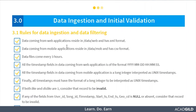Next is data ingestion and initial validation. This process is important because if you load invalid data and perform analysis, you will not get correct results, so you have to be very careful about whether the data is valid. There are two kinds of data being captured: one through web and the other through mobile. Data captured through the web is in XML format, and data captured through the mobile application is in CSV format.